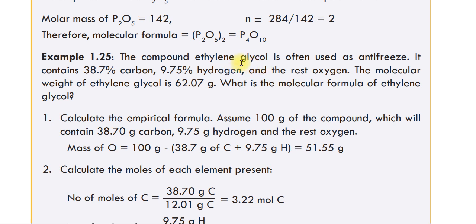A compound — ethylene glycol, often used as antifreeze — contains 38.7% carbon, 9.75% hydrogen, and the rest oxygen. The molecular weight of ethylene glycol is 62.07 grams. What is the molecular formula of ethylene glycol? To solve this, calculate the empirical formula by assuming 100 grams of the compound.